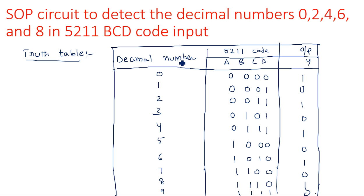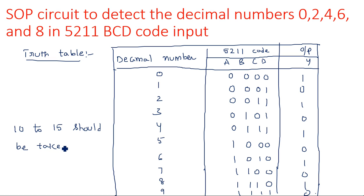The remaining numbers 10 through 15 are not possible in 5-2-1-1 BCD code and must be taken as don't cares (marked with X). Those decimal numbers which are not possible with this 5-2-1-1 code must be taken as don't cares — this is a very important note.